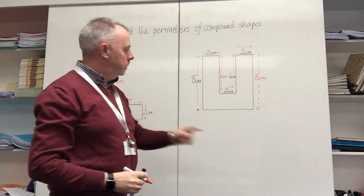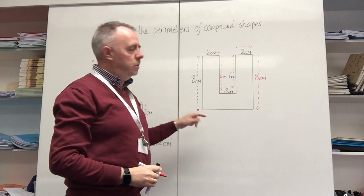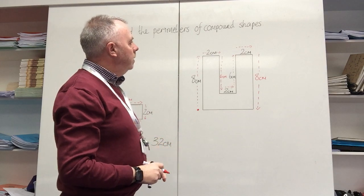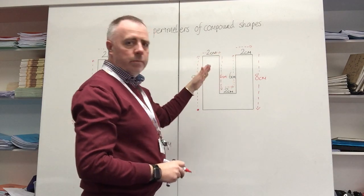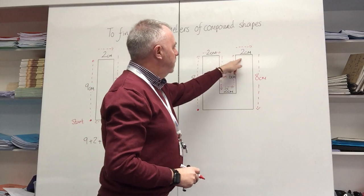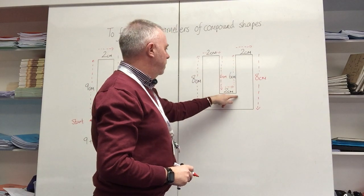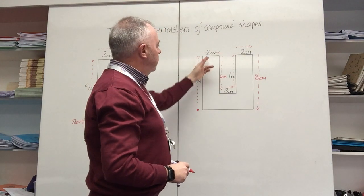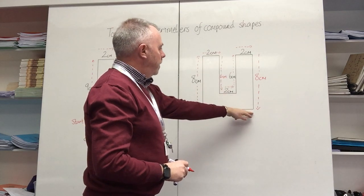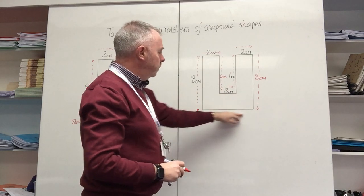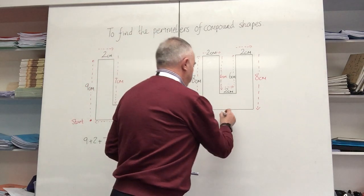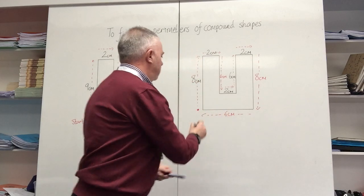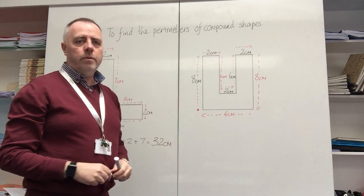I've now got the base of this letter U but I don't have a measurement for it. I look back at my shape and I know this distance is 2 centimeters, this distance is also 2 centimeters, and this distance is 2 centimeters — so 2 + 2 + 2 occupies the same distance as the bottom, which gives me 6 centimeters. So I now complete my journey around the shape.